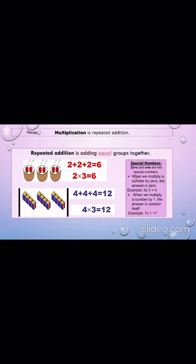Students, you have to remember that 0 and 1 are two special numbers. When we multiply a number by 0, the answer is 0. For example, when we multiply 5 and 0, the product is 0. Similarly, when we multiply a number by 1, the answer is the number itself. For example, 7 multiplied by 1 equals to 7.